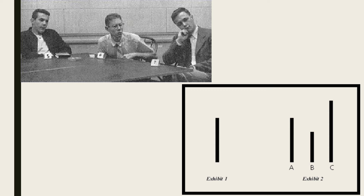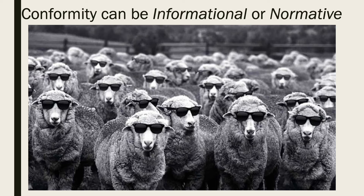Asch was the first to identify two different types of conformity: informational and normative. Informational conformity occurs when we go along with the judgment of a group because we think the group knows something we don't — maybe there's a trick, or we're not seeing things correctly. In normative conformity, on the other hand, we know the group is wrong, but we go along anyway — perhaps because we want to be accepted, avoid hassle from arguing, or simply avoid the discomfort of being different.